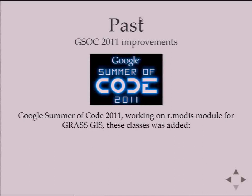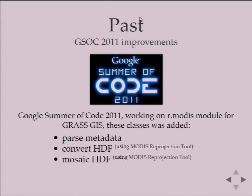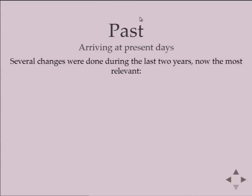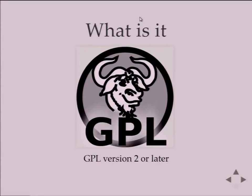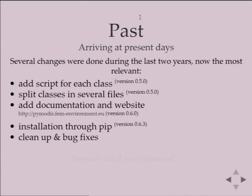A big improvement came in 2011 when I participated in Google Summer of Code. My project was working on i.MODIS, a module for GRASS GIS to work with MODIS data. We needed more classes to have a complete stack for working with GRASS and MODIS, so we added the capability to parse metadata and to mosaic and convert tiles. After August 2011 I released version 0.4 with all these features.